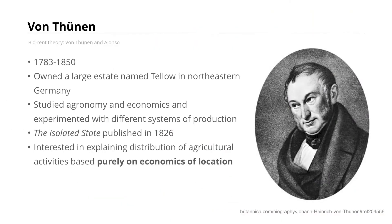Bid-rent theory is a really important theory to understand as we move forward through this quick tour through classical location theory. It starts with Johann Heinrich von Thunen, who lived from 1783 to 1850. He owned a large estate named Tello in northeastern Germany, studied agronomy and economics, and experimented with different systems of production. His seminal work, called The Isolated State, debuted this initial location theory in 1826 — predating Alfred Marshall's 1890 contributions discussed in the last chapter.